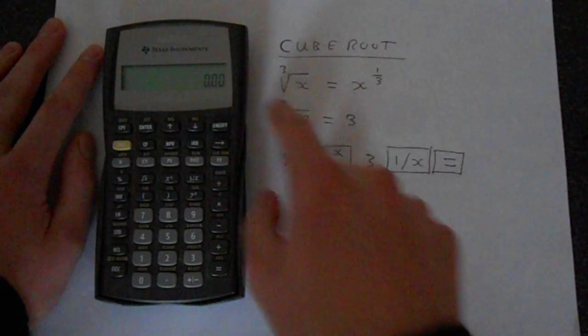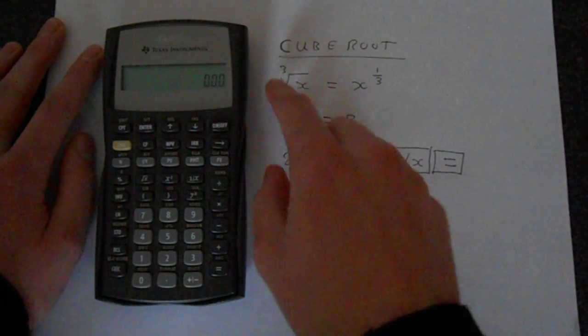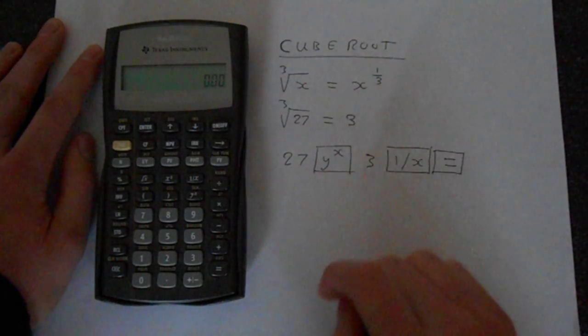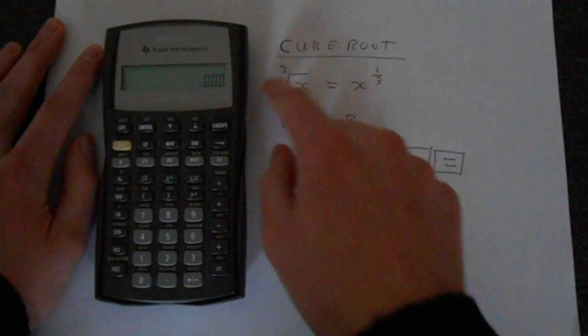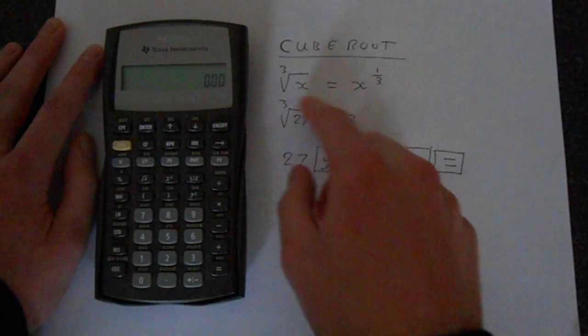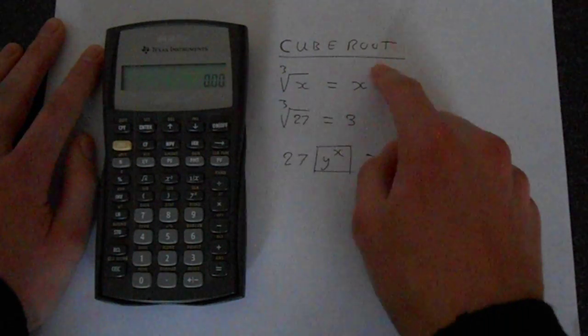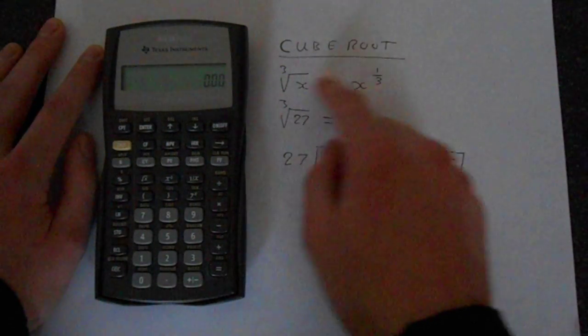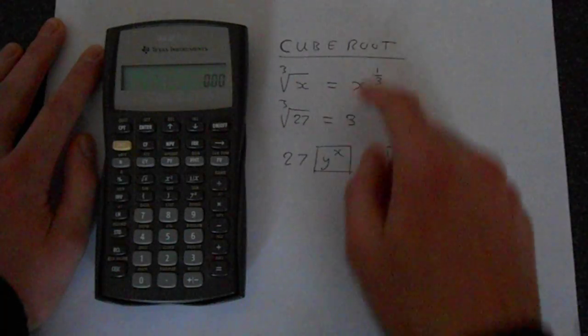So you should know from basic mathematics that there's an equivalence between roots and powers. The cube root is the same as the power of one third, where basically this number goes on the bottom and then the power of x goes on the top. So if this was squared you'd have a 2 at the top, but since it's the power of 1 you have a 1.